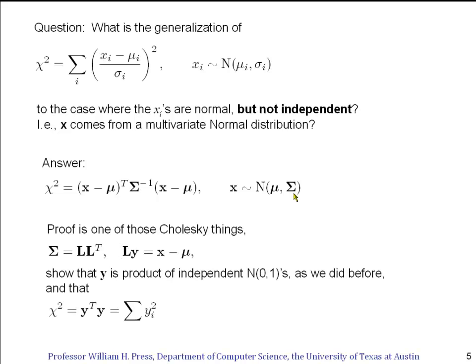So I've just asserted this, but let's prove it. It's actually pretty easy to prove. It's one of these Cholesky things like we've seen in a couple of previous segments. We're given the covariance matrix Σ, so we Cholesky decompose it into a product of L times Lᵀ, as usual. We define a variable y by the relationship Ly = x - μ.